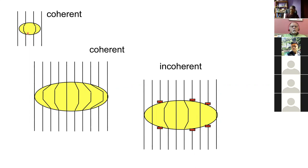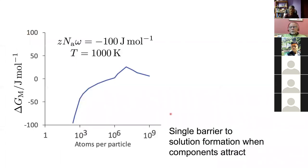On a graph of free energy of mixing versus particle size, starting with large particles and making them smaller, the free energy initially rises — all positive — and then decreases. This is exactly the opposite of a nucleation barrier. The free energy rises because interfacial energy is not decreasing fast enough as particles become smaller; eventually as coherency is gained, the atoms can be more intimately mixed and free energy drops.